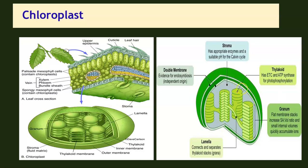All the pigments — chlorophylls, carotenoids, and xanthophylls — are located in the thylakoid membrane. These pigments absorb light of specific spectrum in the visible region. The pigments are fat-soluble and located in the lipid part of the membrane. With the help of certain enzymes, they participate in the conversion of solar energy into ATP and NADPH. The enzymes of the stroma utilize this ATP and NADPH to produce carbohydrates.